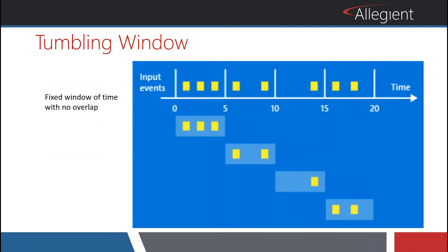There's a tumbling window, which is fairly straightforward. I set up a query to retrieve data from five minutes ago to now. My Streaming Analytics job runs right now, pulling five minutes of data, and I've told it to only pull that data every five minutes. So not only am I pulling five minutes of data, but I'm also only running every five minutes. Essentially you have blocks of information where none of that data is replicated — it's not read more than once. In the first five-minute window there were three; in the five-to-ten-minute window there were two; in ten-to-fifteen there was one. That is a tumbling window — it tumbles, with no overlap.